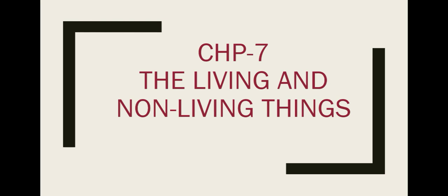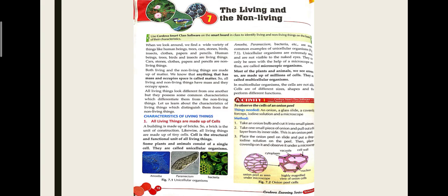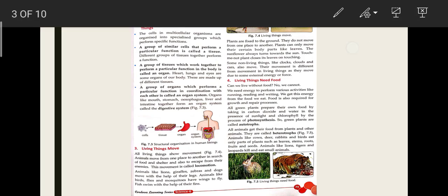In the previous class, we completed Part 1 of this chapter. We covered living and non-living things and the characteristics of living things — that all living things are made up of cells. A cell is the structural and functional unit of living things. Based on cells, living organisms are divided into unicellular and multicellular organisms.